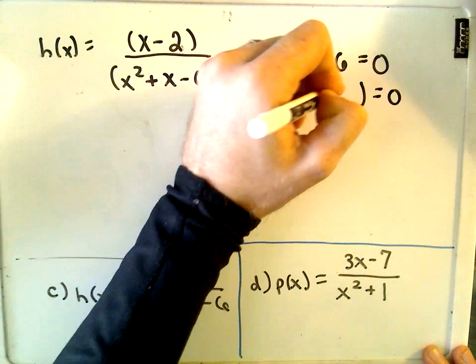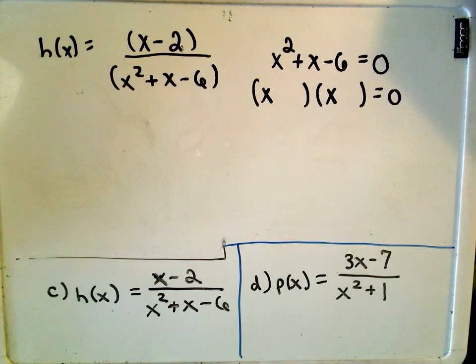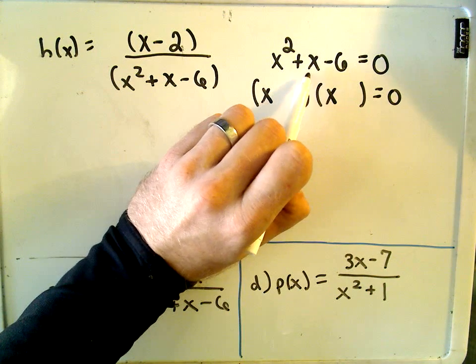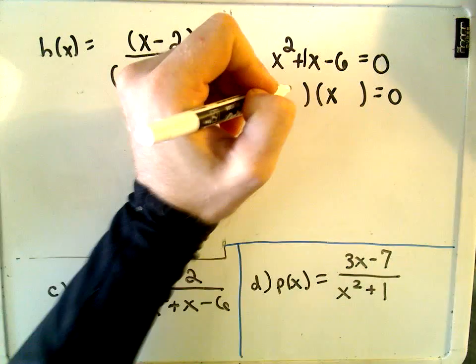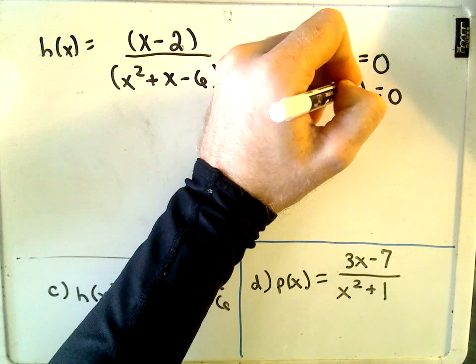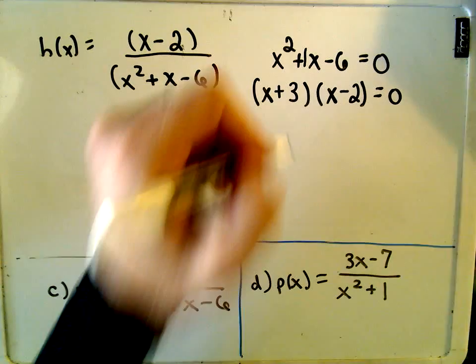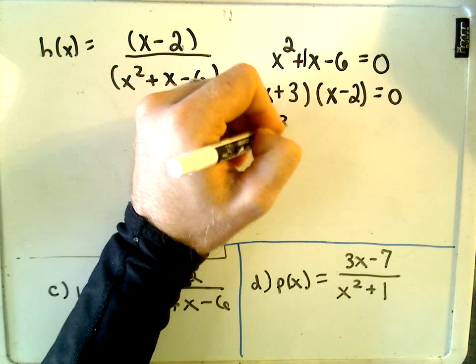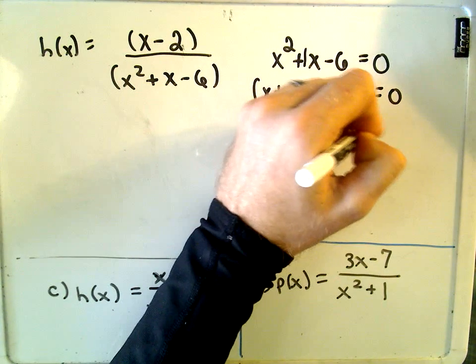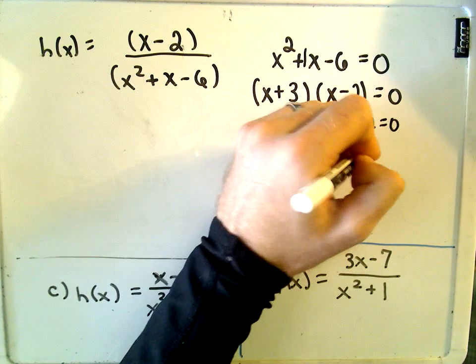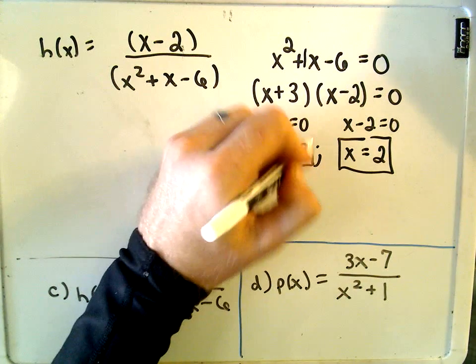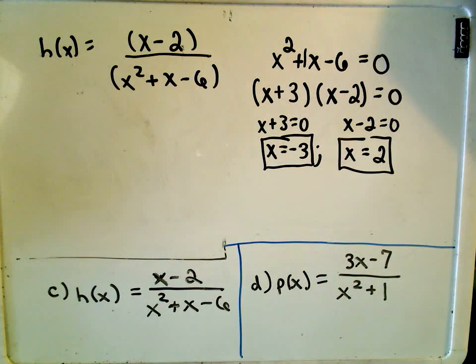So we're going to need an x and an x to get x squared. Remember, we need two numbers that multiply to negative 6 that add up to positive 1. Well, I think, how about positive 3 and negative 2? Well, if we set each piece equal to 0, we'll simply get x equals negative 3. And if we set the other piece equal to 0, the other factor, we'll simply get x equals 2. So these are my potential vertical asymptotes.